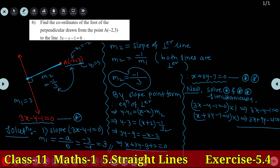Subtracting the first equation from the second: the 3X terms cancel. We get minus Y minus 9Y equal to minus 10Y, and minus 1 plus 21 equal to plus 20. So minus 10Y plus 20 equal to 0, giving minus 10Y equal to minus 20, therefore Y equal to minus 20 divided by minus 10, so Y equal to 2.